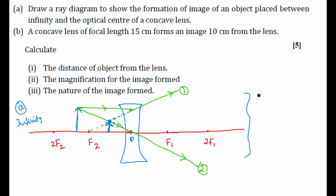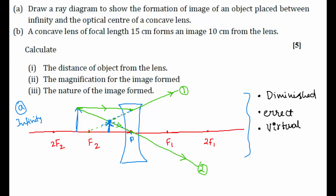What are the properties of the image formed here? It is diminished, erect, and it is virtual — because rays are not actually meeting. So these are the properties of the image formed. Let's go to the next question.